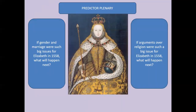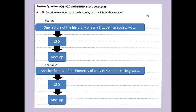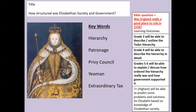Finishing up today: predict — if gender and marriage were such big issues, what will happen next? And if arguments over religion were such a big issue for Elizabeth, what will happen next? That's your second lesson on Elizabeth — Elizabethan society. Going back to what we wanted to do at the start: describe the Tudor hierarchy, describe it in detail, how ordered the hierarchy really was and how government supported it, and look at some of the problems and solutions for Elizabeth based on knowledge of Elizabethan society. Finish all that up on your paper — thanks very much for watching.